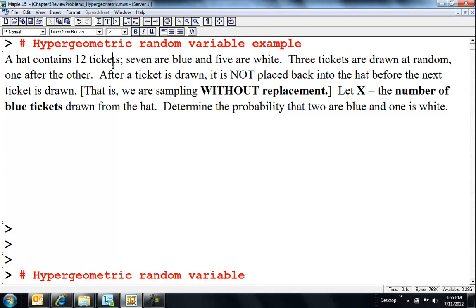So a hat contains 12 tickets, and a hypergeometric, that's our population size, so N is equal to 12, and there are 7 blue, so 7 blue and 5 white, and I'm going to draw 3 tickets, that's my sample size. After a ticket is drawn, I'm not going to put it back into the hat again. That's what's making this a hypergeometric instead of a binomial. So the probability of getting a blue changes every time you draw out a ticket.